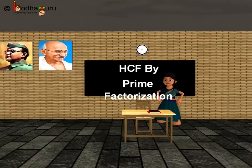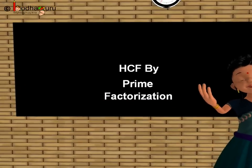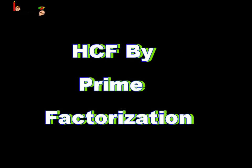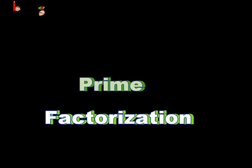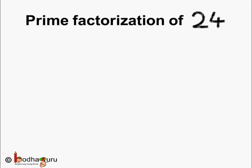Good morning children. You know how to find HCF by using the prime factorization method. Let us try to solve another problem using the prime factorization method. Now find the HCF of 24 and 36 using the prime factorization method. First we will start with the number 24.